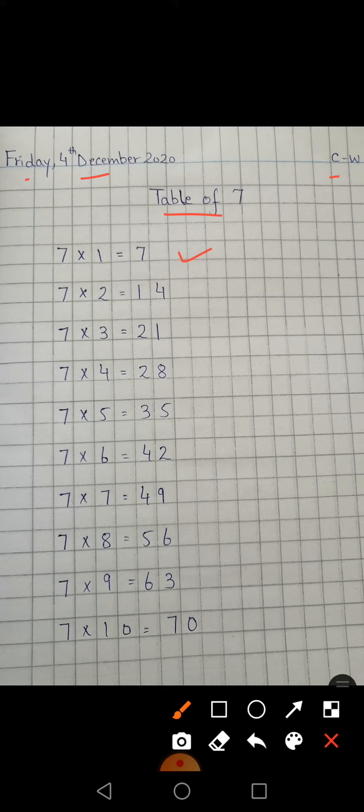7 twos are 14, which means 7 two times is 14. 7 threes are 21. 7 fours are 28. 7 fives are 35. 7 sixes are 42. 7 sevens are 49. 7 eights are 56. 7 nines are 63. And 7 tens are 70. So students, this is your table of 7.